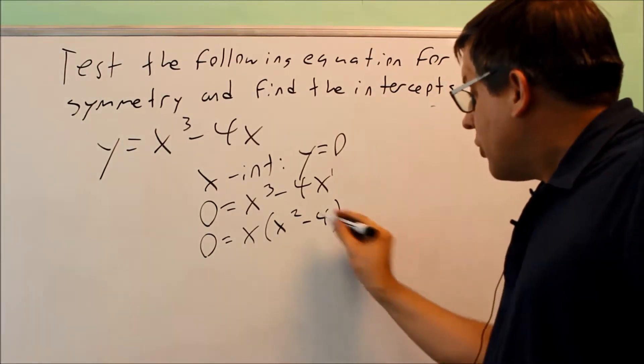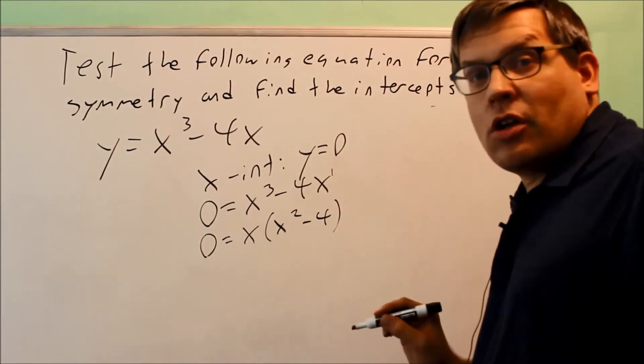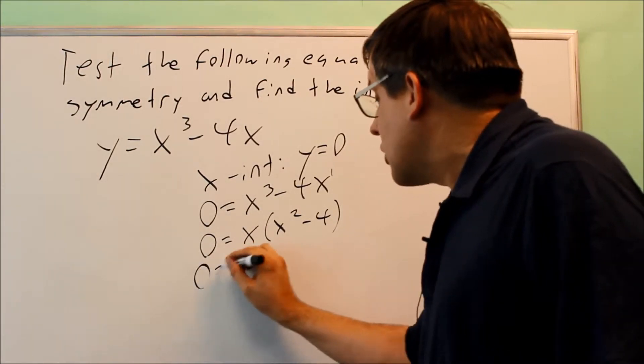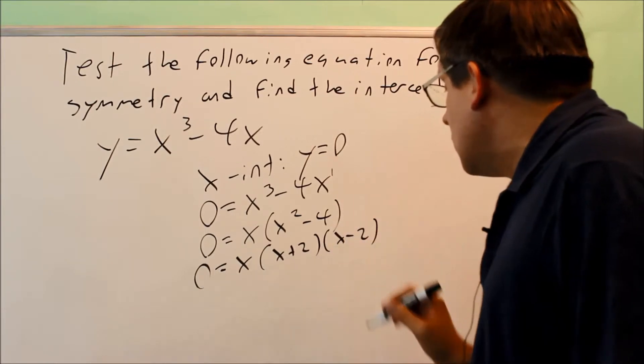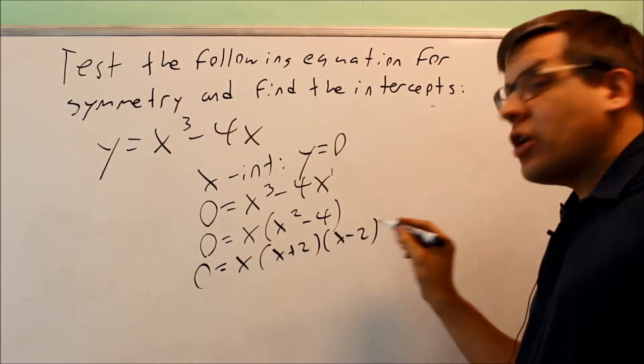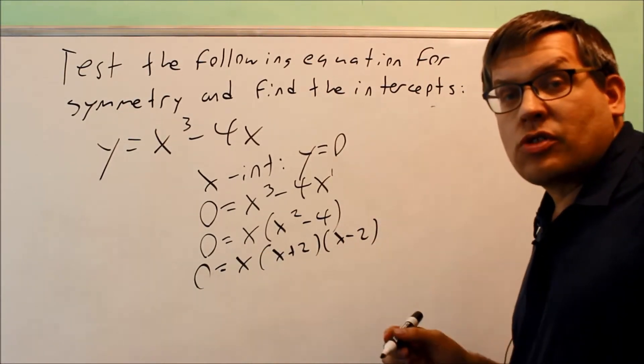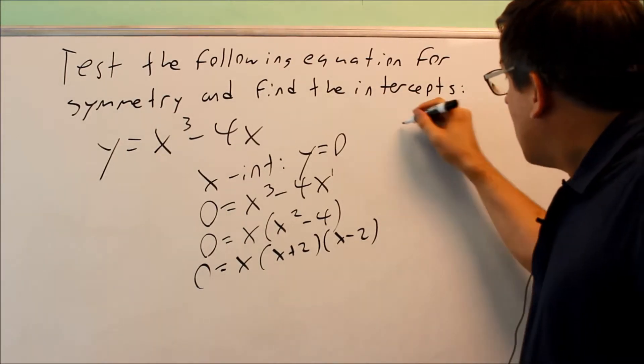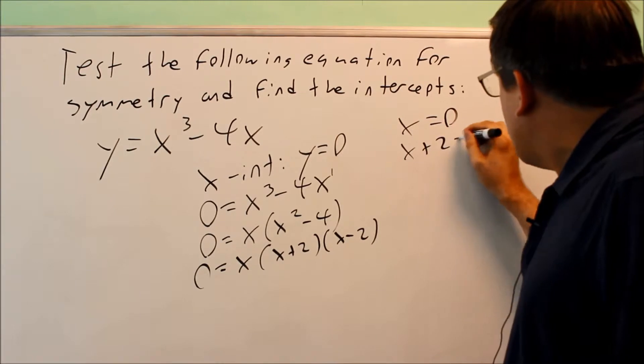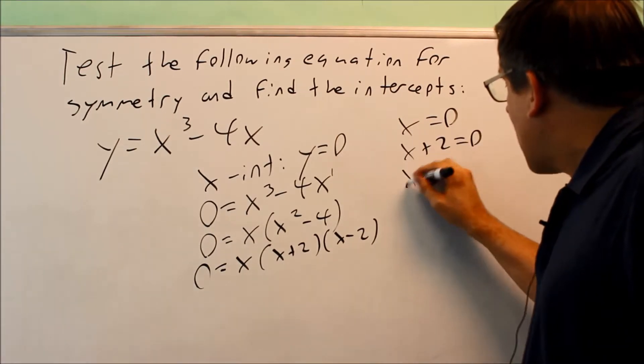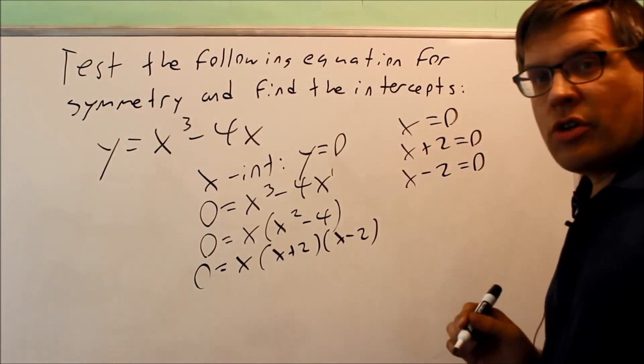So this one can be factored one more time. We can use the difference of squares to factor that one. So this is going to be x plus 2 and x minus 2. We need to take all three of these individually, set them equal to 0 to get our answers. So x is going to equal 0. Then we get x plus 2 equals 0. And we have x minus 2 equals 0.